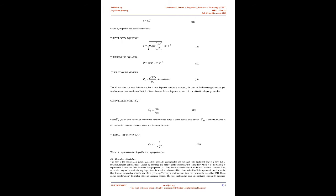The compression ratio (RC) relates the total volume of the combustion chamber when the piston is at the bottom of its stroke (VBDC) to the total volume when the piston is at the top of its stroke (VTDC). Thermal efficiency (ηT) is given as a function of the compression ratio and the ratio of specific heat (k), a property of air.